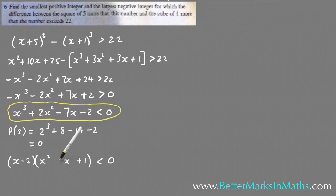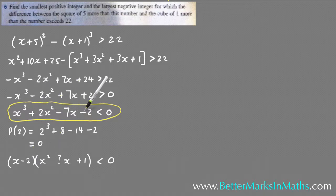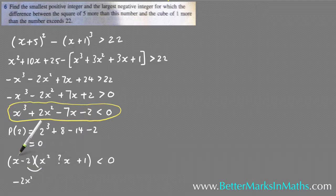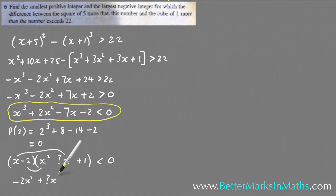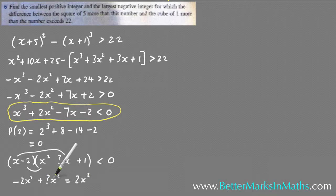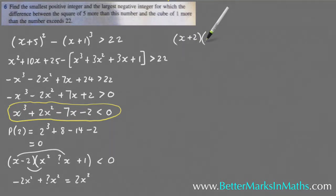There's going to be an x term — call it ?x — in the second bracket. When you multiply the two brackets out, that times the known factor gives this cubic. To find the unknown coefficient: (x - 2)(x²) gives -2x², and we also get another x² term from multiplying the unknown ?x by x, giving +?x². Combining those must equal +2x², so -2x² + 4x² = +2x², meaning the unknown is 4.